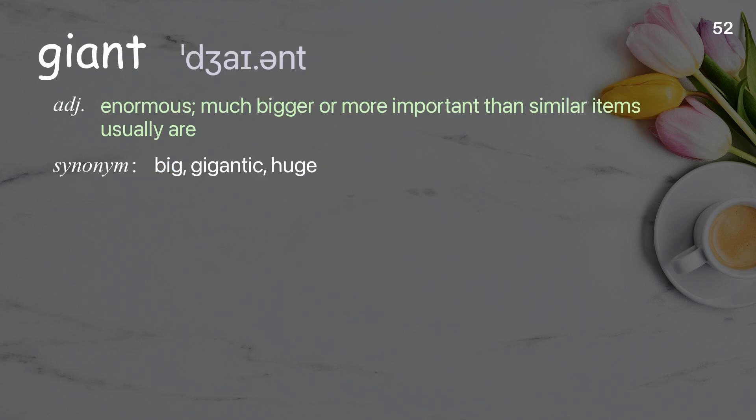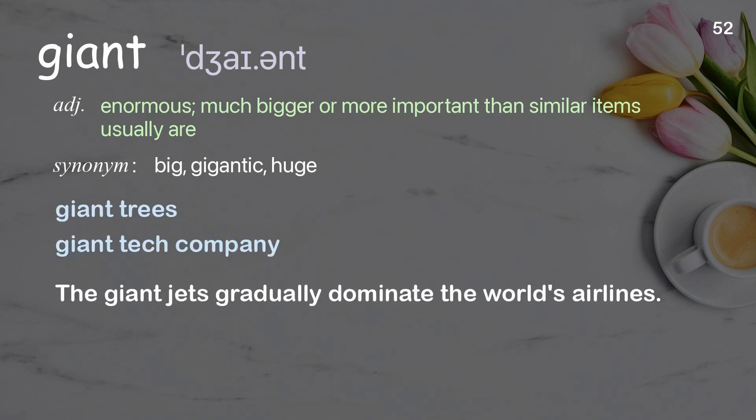Giant: extremely big; much bigger or more important than similar items usually are. Examples: giant trees; giant tech company. The giant jets that gradually dominate the world's airlines.